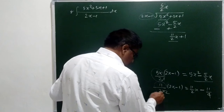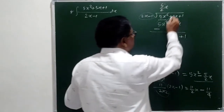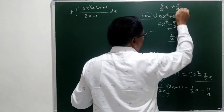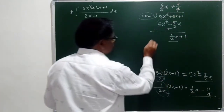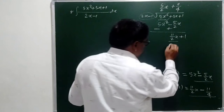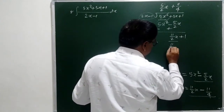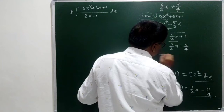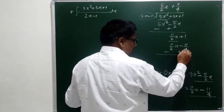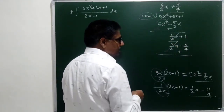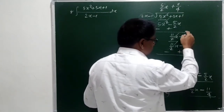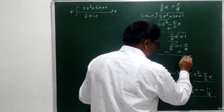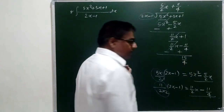Therefore, the quotient now is plus 11 by 4. And this term we are supposed to write here: 11 by 2x minus 11 by 4. Subtract — signs will change, this will get cancelled. 4 ones are 4 plus 11 is 15, so the remainder is 15 by 4.